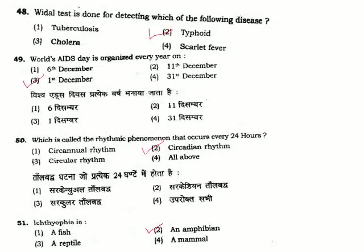Question 49: World AIDS Day is organized every year on — AIDS Day is on 1st December. Correct answer is Option 3. Question 50: Which is called the rhythmic phenomenon that occurs every 24 hours — it is called the circadian rhythm. Option 2.